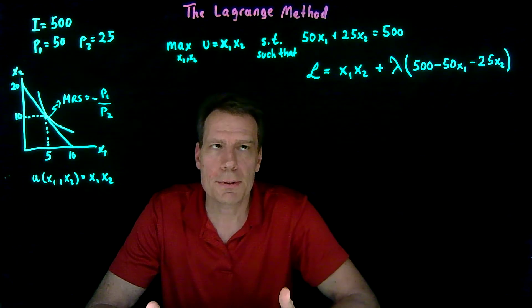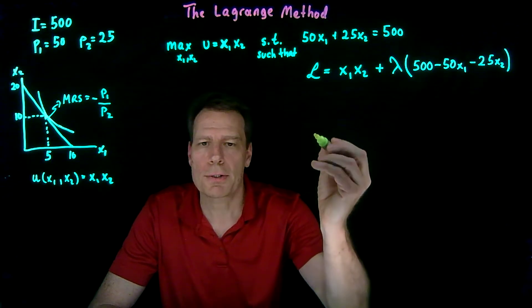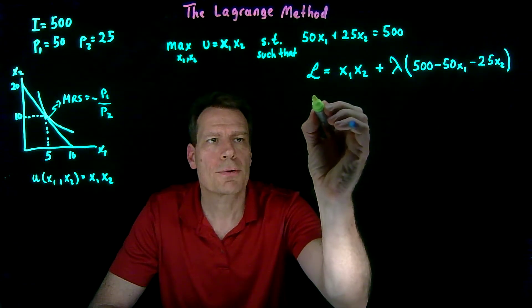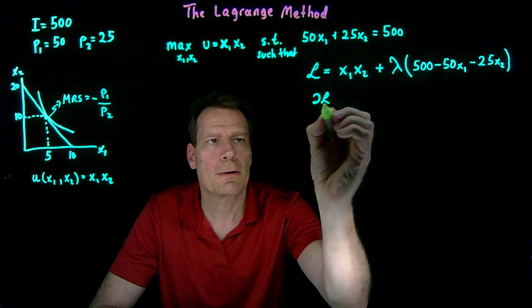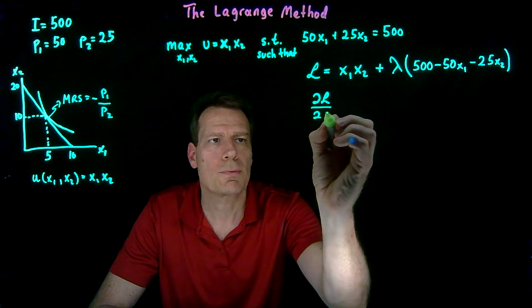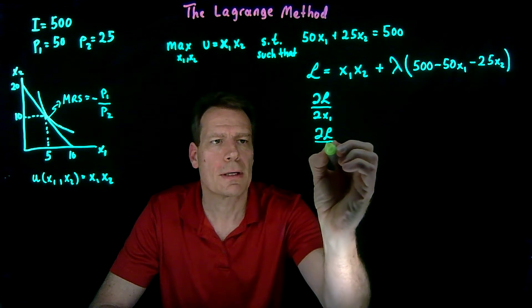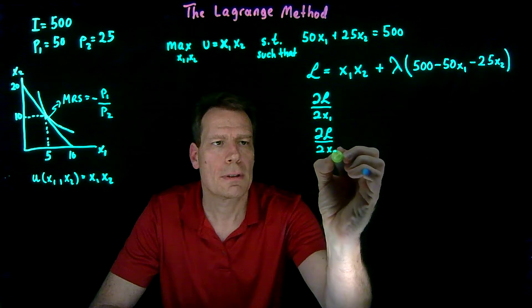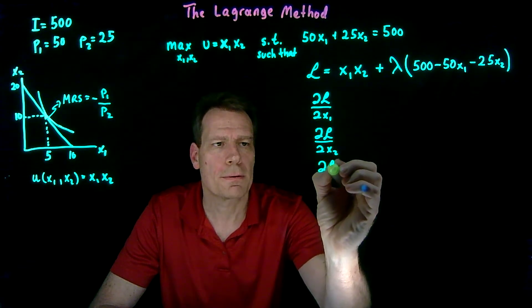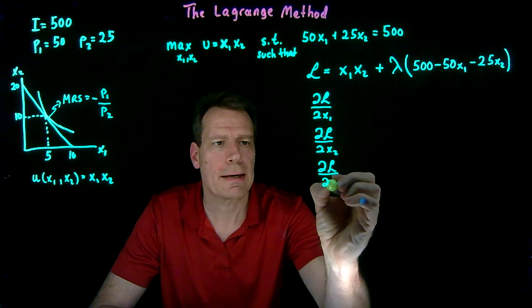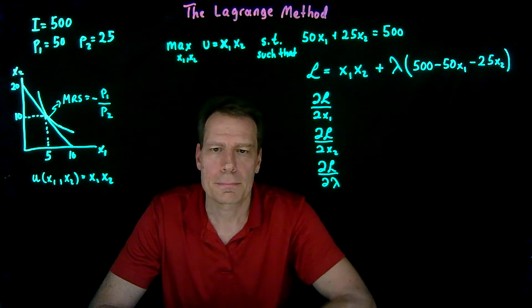The next thing we do is we take some partial derivatives, three of them. First, the partial of L with respect to x1. The second, the partial of L with respect to x2. And the third, the partial of L with respect to lambda. So let's do that.